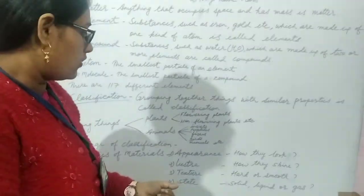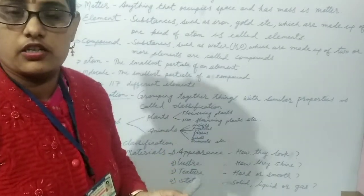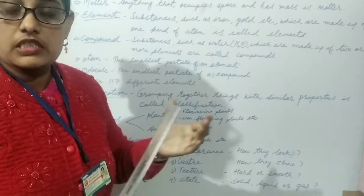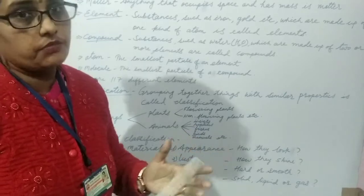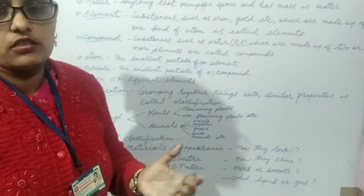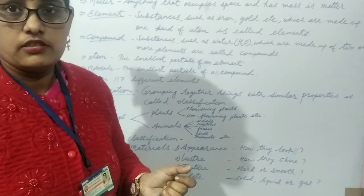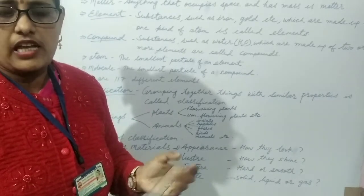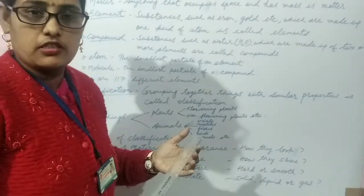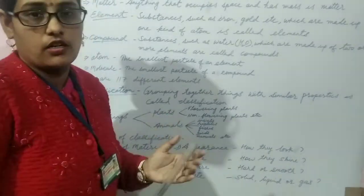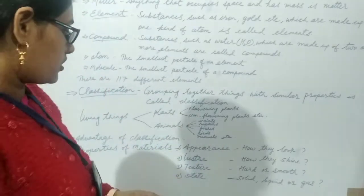Lustre. The second one is lustre. How do they shine. Suppose iron is not very lustrous. But steel is lustrous. Gold is lustrous. Some things shine. Some things do not shine. Wood do not shine. But iron has little bit lustrous. And gold is very lustrous. So some materials have a particular lustre. Metals have lustre. But non-metals do not have lustre.